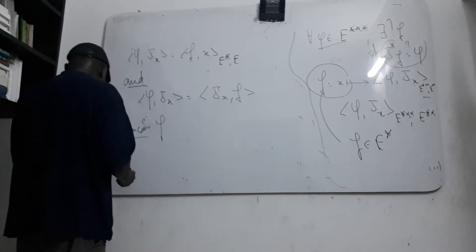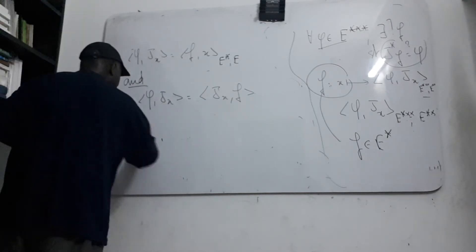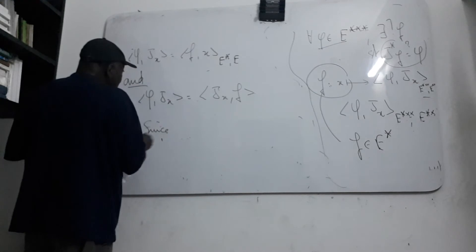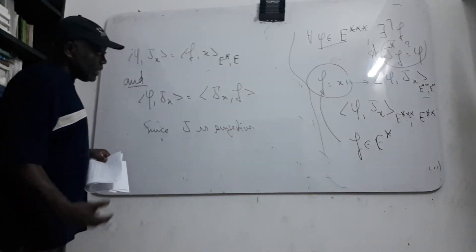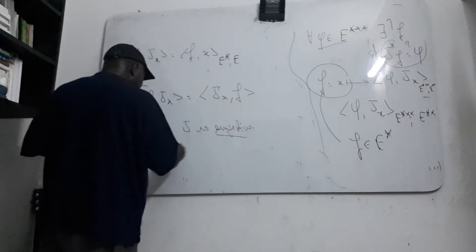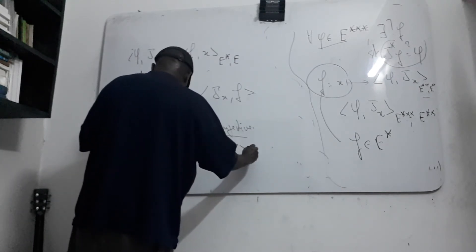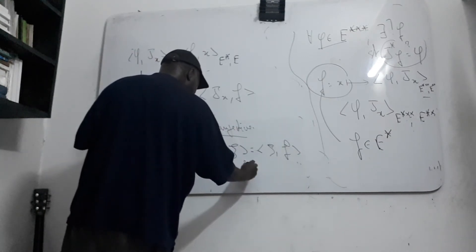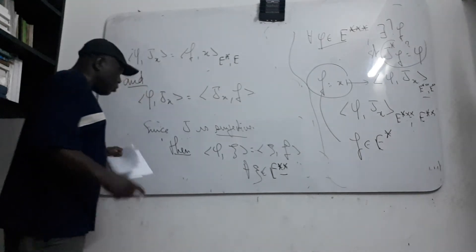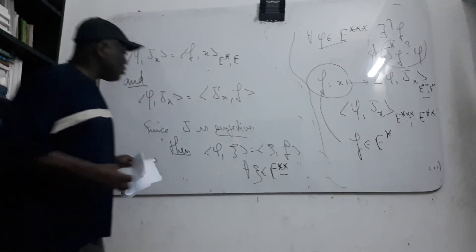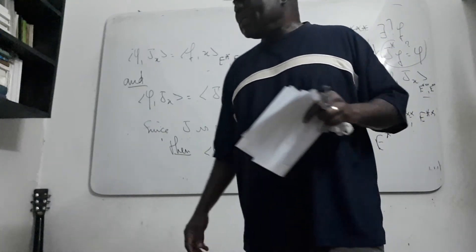Since F is a limit and D is surjective, but because we suppose only that E is reflexive, this map is surjective. Then you have this map of phi and sigma, which is the limit of this, and must be equal to this of phi, for all sigma in the bidual of this space. So here you have this map which should be equal to this.